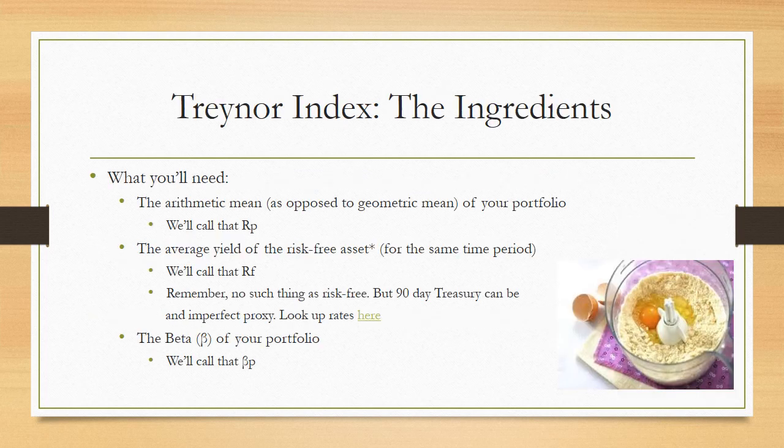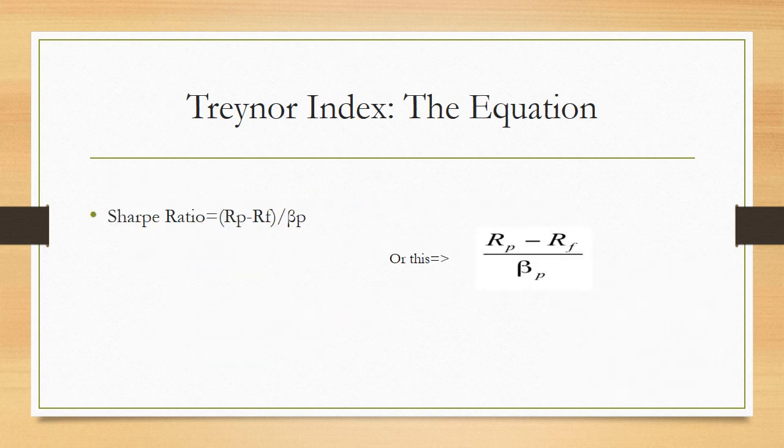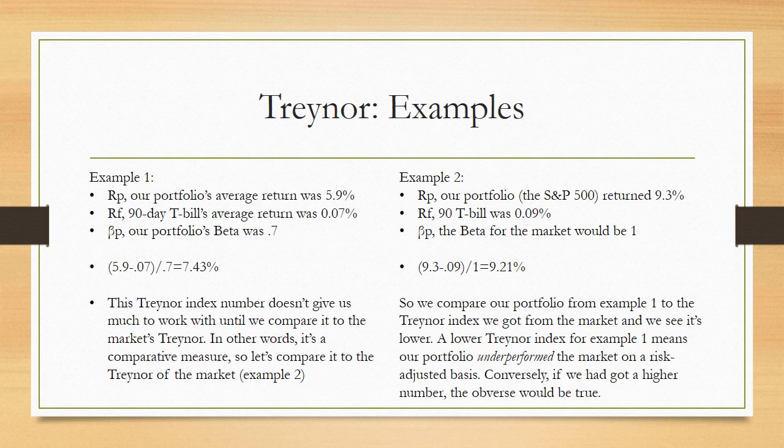Moving on to the Treynor Index — it's fairly similar to the Sharpe Ratio. We need the same first two ingredients: the return of the portfolio and the risk-free return. But instead of standard deviation, we're going to need the beta. We covered beta in a previous blog post. The equation: (Portfolio Return − Risk-Free Rate) ÷ Beta. In Example 1, the portfolio returned 5.9%, the risk-free rate was 0.07%, and the beta was 0.70. Plugging that in gives us a Treynor Index of 7.43%.